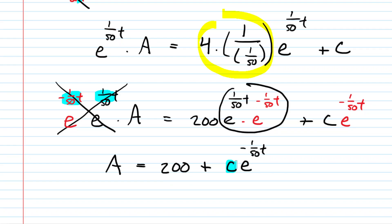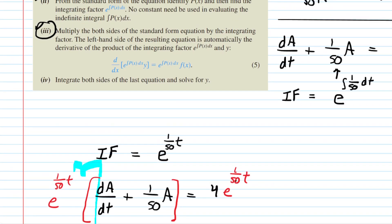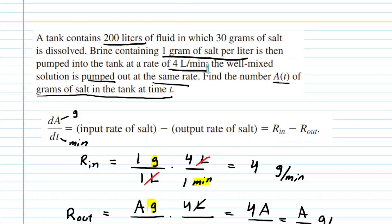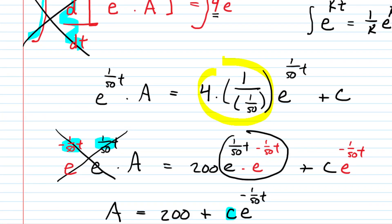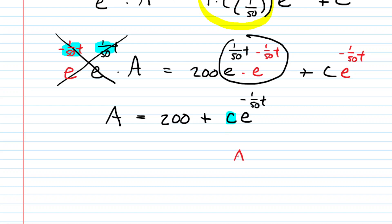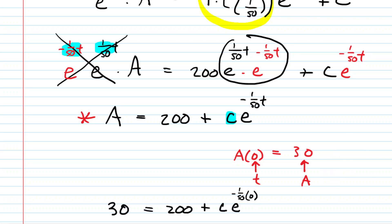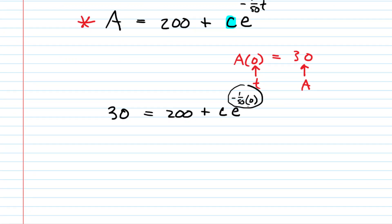Looking back at the problem, we were told that initially there were 30 grams of salt, meaning A at time zero equals 30. Plugging in T equals 0 and A equals 30 into our solution: e to the negative one-fiftieth times zero is e to the zero, which is 1, so C times 1 is just C. We get 30 equals 200 plus C, and subtracting 200 from both sides gives C equals negative 170.